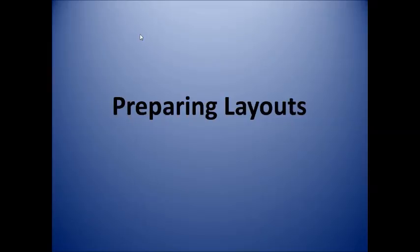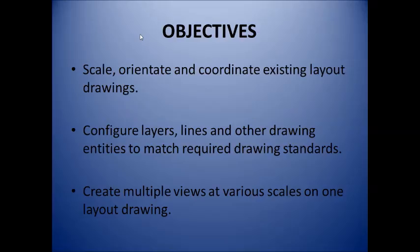The three core objectives of the series that I'm going to be putting together are to scale, orientate, and coordinate existing layout drawings. We're then going to configure layers, lines, and other drawing entities to match our required drawing standards. This could be something simple like saying that all road center lines will be color 9 dashed, road edges will be color green continuous lines, for example. Then obviously the final thing we'd like to do is to be able to create multiple views at various scales on one layout drawing, something which is quite an important function.